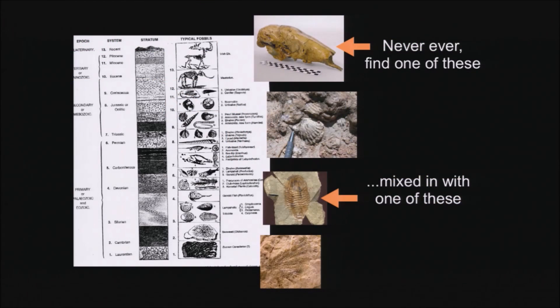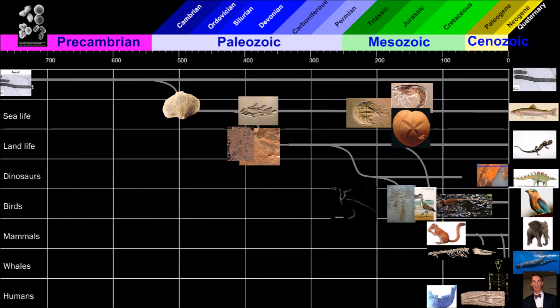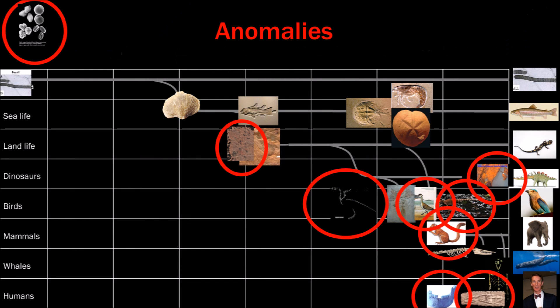"You never, ever find a higher animal mixed in with a lower one. You never find a lower one trying to swim its way to the higher one. People have looked and looked and looked. They have not found a single one." Well, these are some of the anomalies that are supposedly not found anywhere in the world, according to this expert.